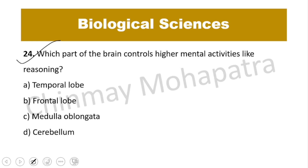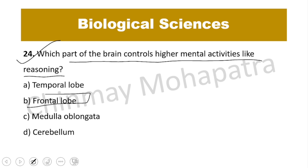Question number 24: Which part of the brain controls higher mental activities like reasoning? The right answer is the frontal lobe — the largest of the four lobes.